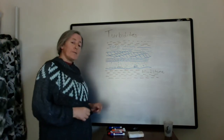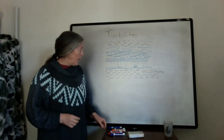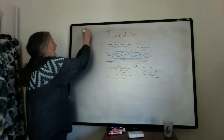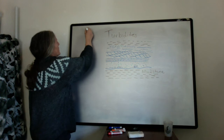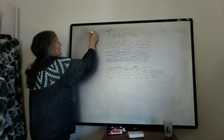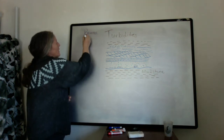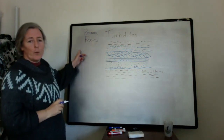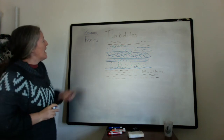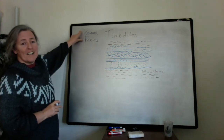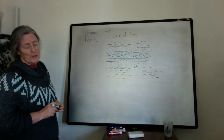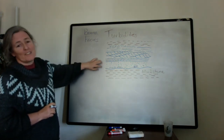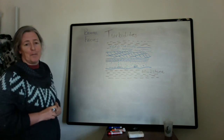Turbidites are a really good example of how we can effectively use facies. There is a geologist, Bouma, who labeled the different parts of a turbidite with names of facies, and we commonly use that sequence of facies that he wrote out because turbidites have a very consistent pattern.